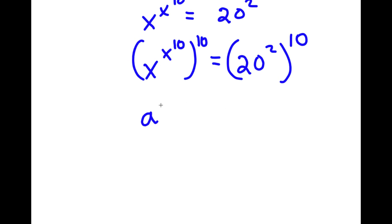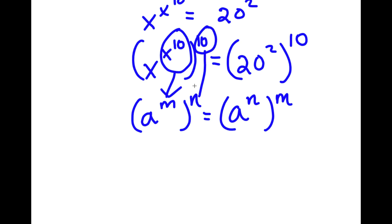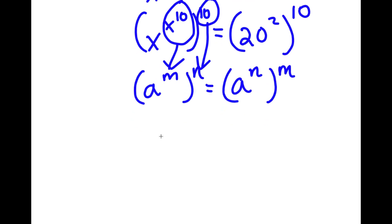Now, if I have something in the form a to the power of m to the power of n, this is the same thing as a to the power of n to the power of m. So in this case, we can think of x to the power of 10 as m and 10 as n, and I can switch these two places. So now I have x to the power of 10 to the power of x to the power of 10.